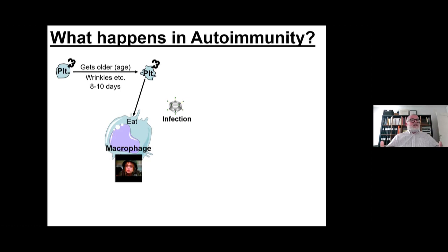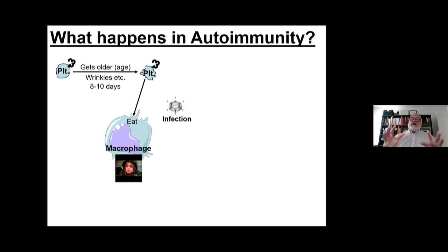One of the best examples is newly diagnosed ITP in children. They usually have a history of an infection three or four weeks before they come into the hospital with ITP. And the interesting thing is, as they clear the infection, about 80% of the children will spontaneously remit — because the immune response against the infection was cross-reacting with their platelets, and once the infection is cleared, those antibodies that bind to the platelets go away.